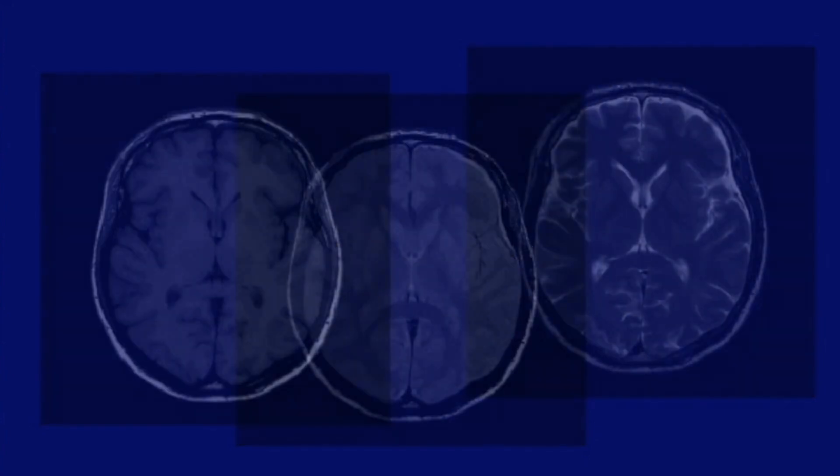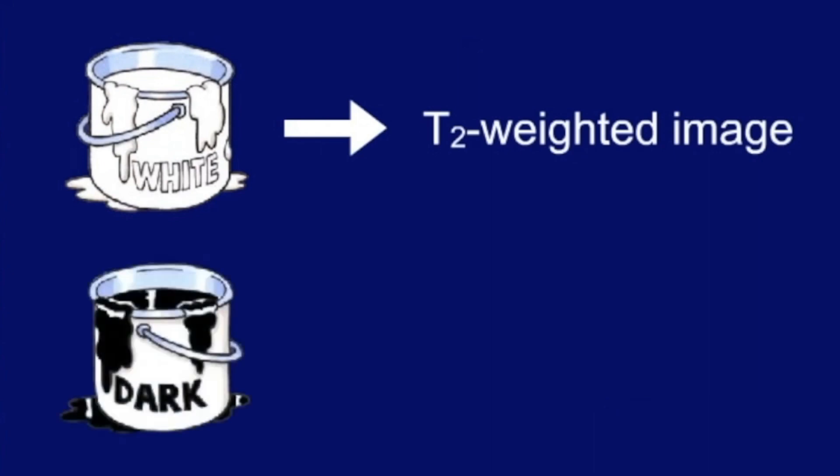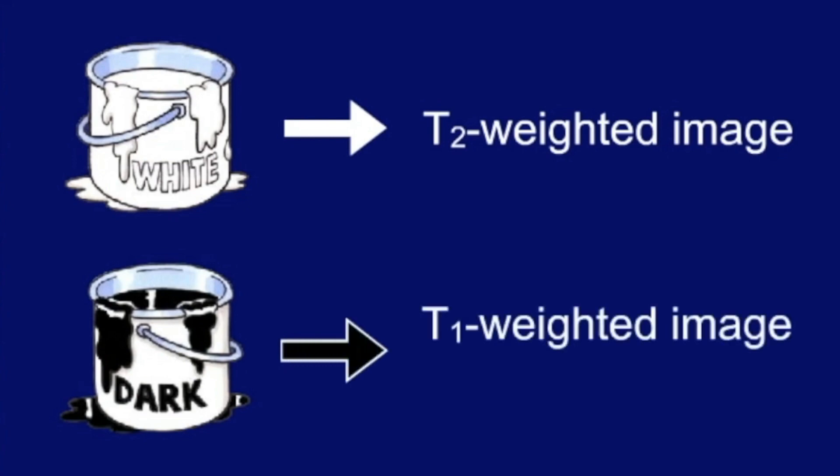As a rule of thumb, if you see white fluid, for example CSF or urine, you're dealing with a T2 weighted image. If the fluid is darker than the solids, we have a T1 or a proton density image.